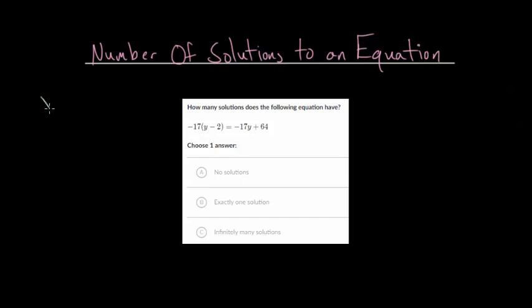So if you have an equation like x plus 3 equals 9, then you can solve this by subtracting 3 on each side, and you get one answer where x is 6. So this is the typical version of an equation, where you just get one answer.